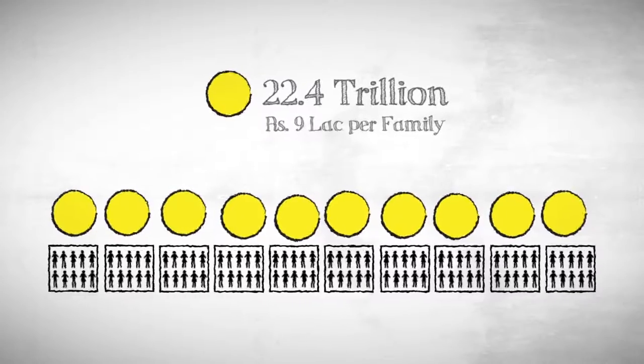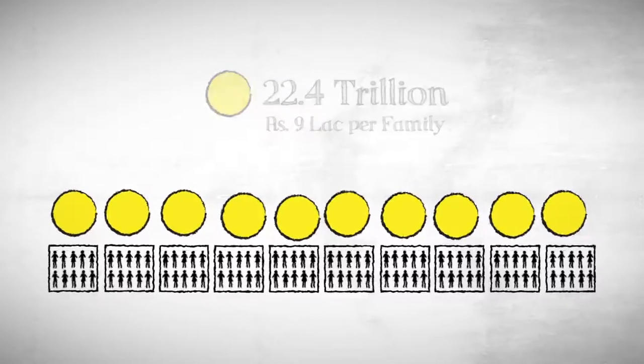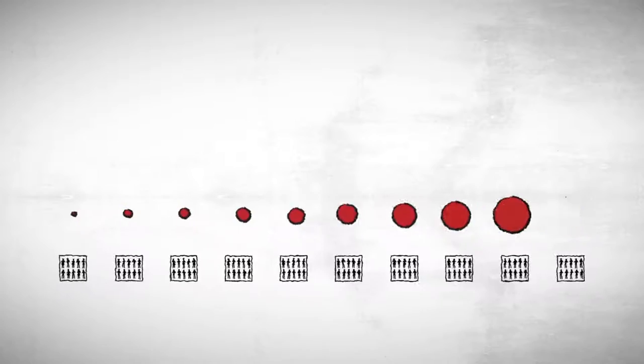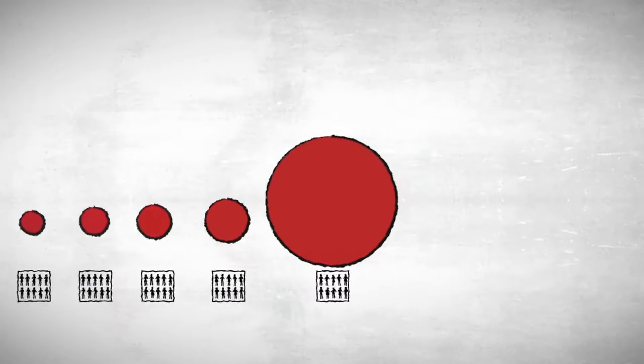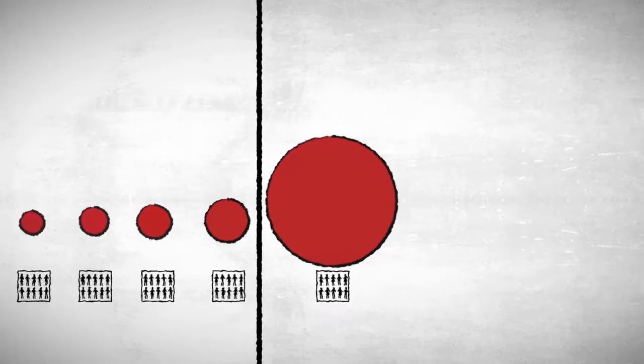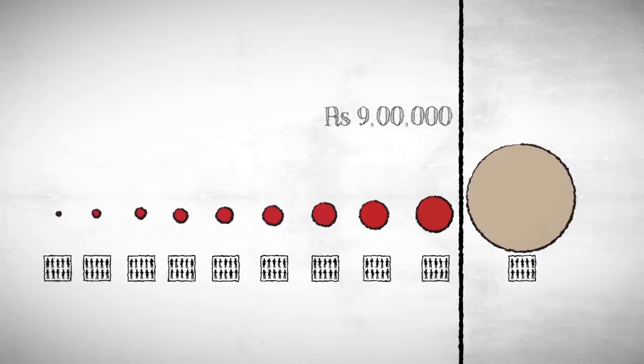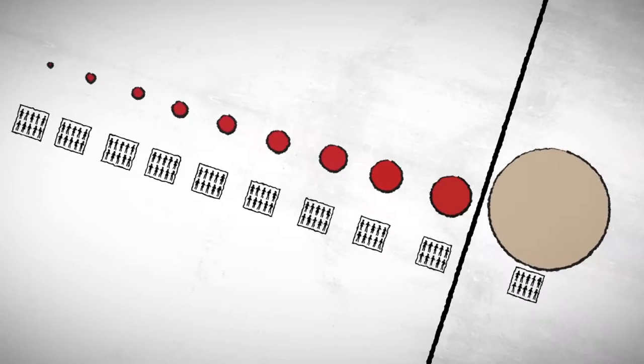Each family in each group would get rupees 9 lakh. Now let's switch to reality. This is how the wealth is actually distributed. Only this one group owns more than 9 lakh. What does that mean?